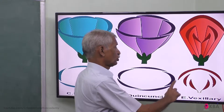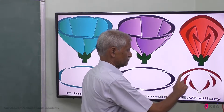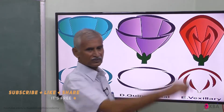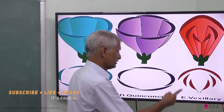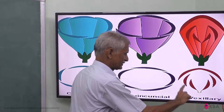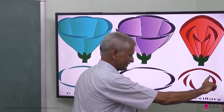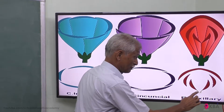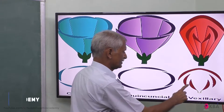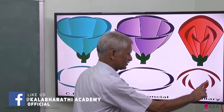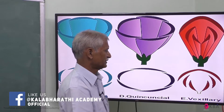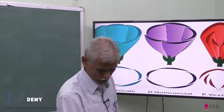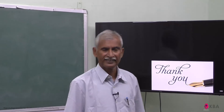In Vexillary aestivation, the posterior petal is totally outside. One margin is inside, the other margin is outside for the lateral petals. The anterior petals are combined together — one is inside, one is outside. This is called Vexillary arrangement. Thank you, students. We will meet again in the next class.